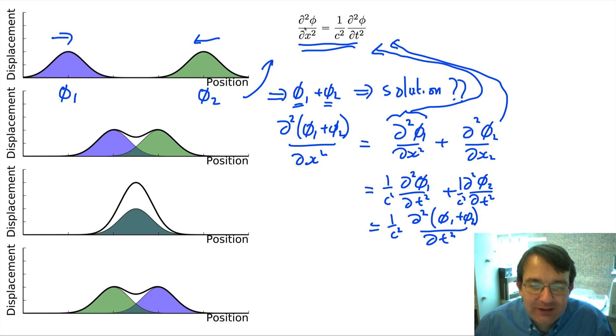It has second-order differentials in it, but you don't have terms like this squared, right? That would be a nonlinear equation. It's only to the power 1, so it's a linear equation. And that means that if you have two solutions to it, then the sum of those two solutions is also a solution to the wave equation. And that is why superposition, this principle of superposition where we can add the displacements together, that's why it works.